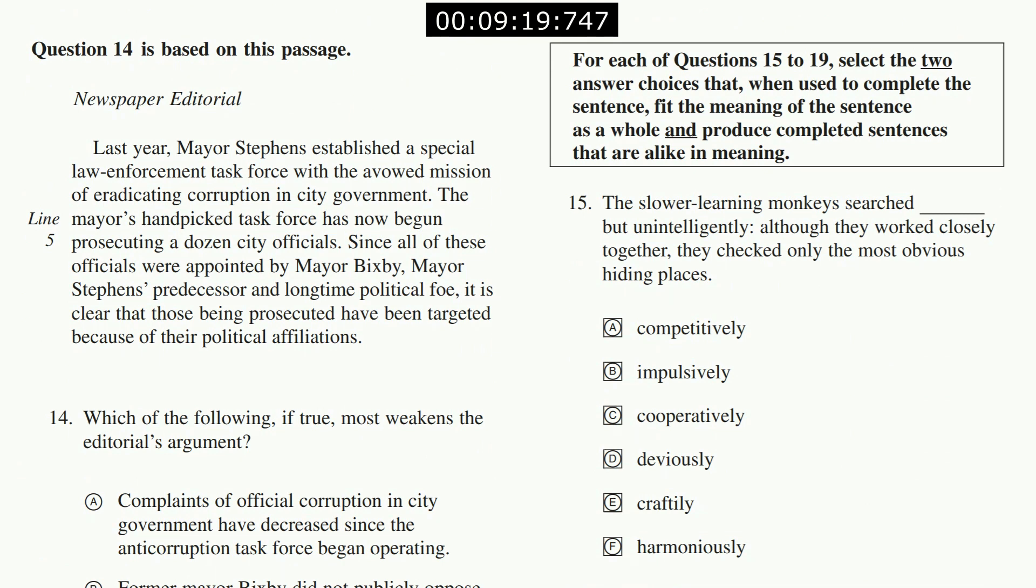The slower learning monkeys searched but unintelligently, so something positive but contrasting with unintelligently. Cooperative would go with harmoniously—cooperative and harmonious fit because you're working together. Let's see: although they work closely together, they checked only the most obvious hiding places. They worked closely together, so they're hinting to you, the ETS, that they want the cooperative and harmonious answer.